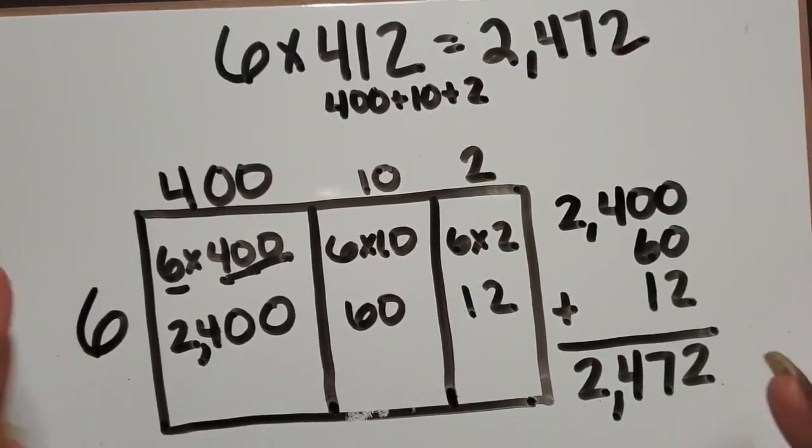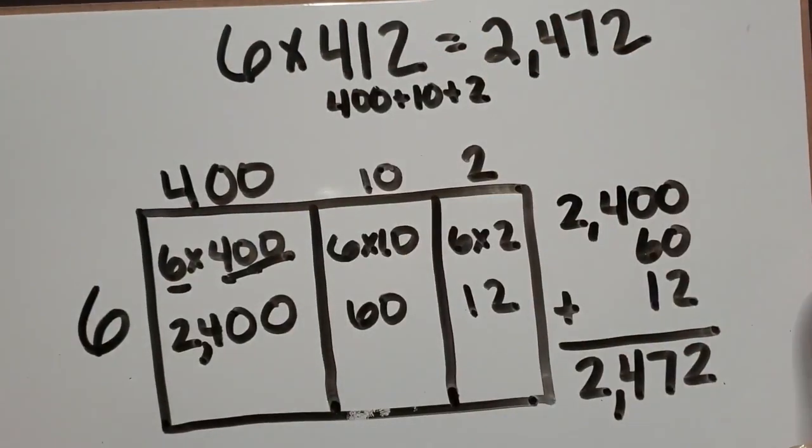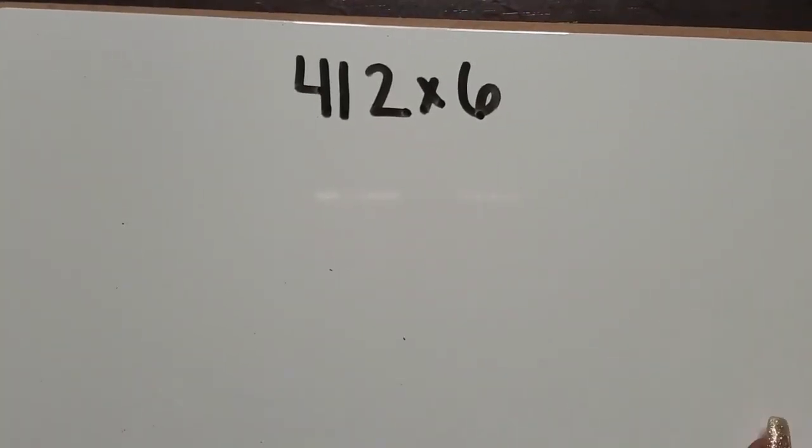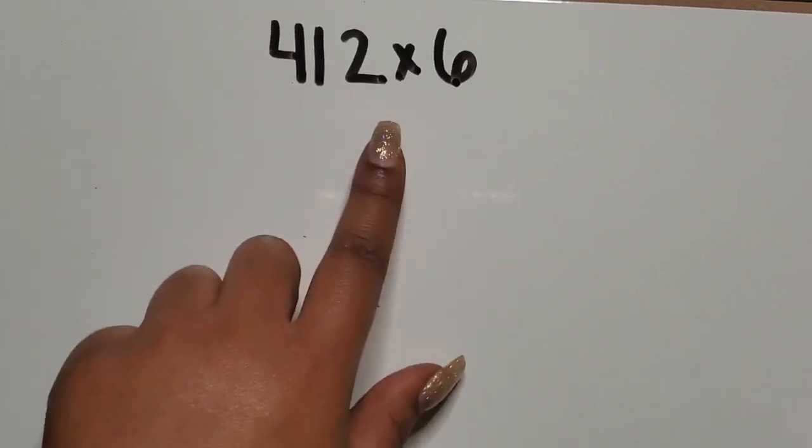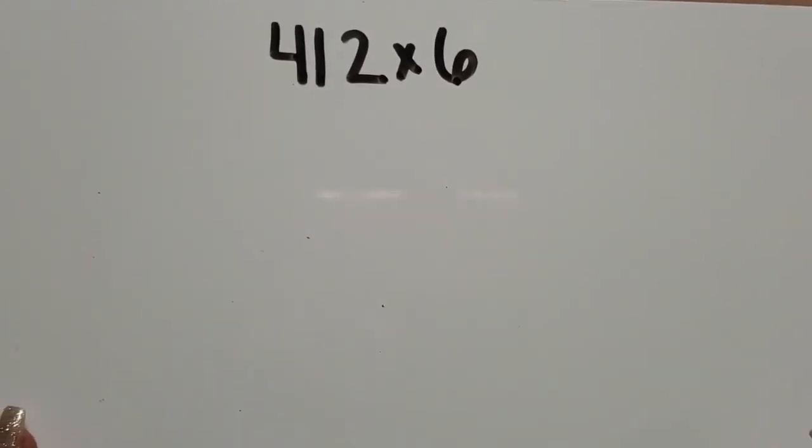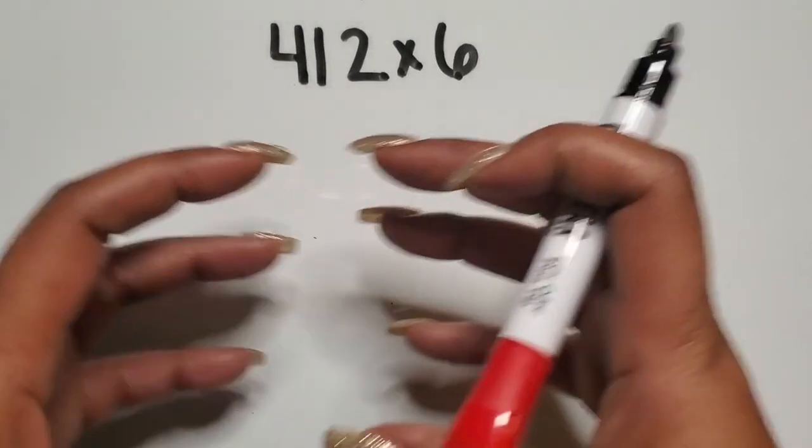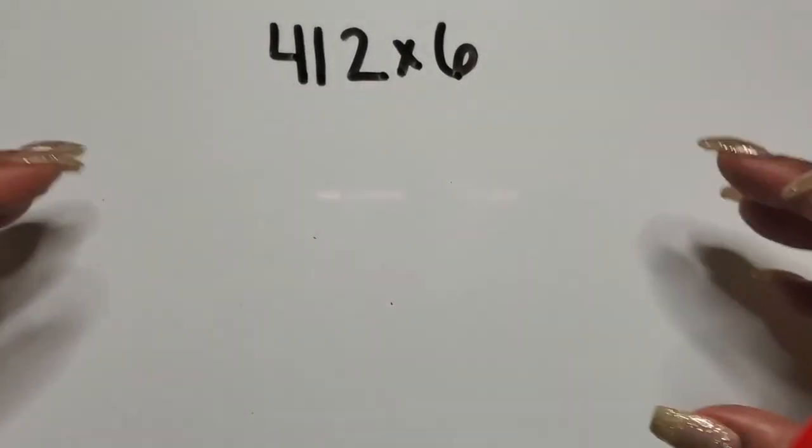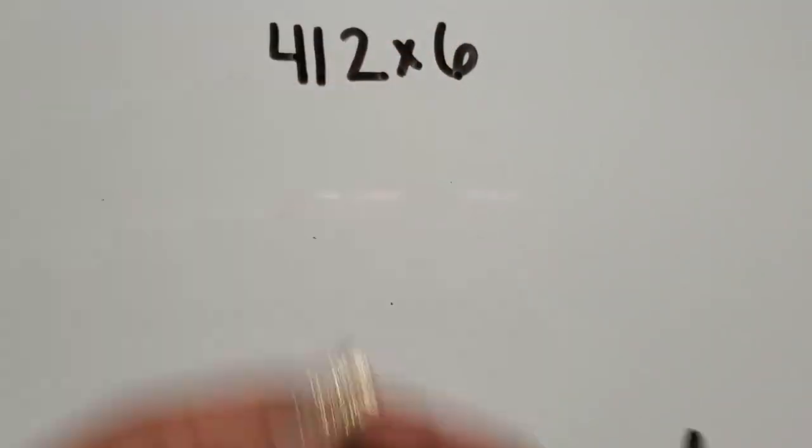Now I'm going to show you what it looks like if we flip the factors or we switch the factors. If 412 was first and then 6 came next, how would it look different? How would it look the same? So instead of my rectangle going this way, it's going to be a little bit taller.